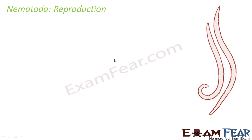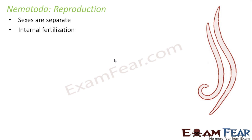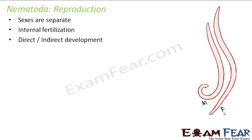Let us talk about reproduction in nematodes. For sexual reproduction, the sexes are separate — there is a distinct male and a distinct female — and reproduction happens by fusion of male and female gametes. Fertilization is internal, occurring inside the body. Males and females are distinct; females are generally longer than males. The fertilized eggs have a thick wall that protects them, allowing survival in adverse conditions. Development can be direct, with no larval stage, or indirect, where a larval stage is involved.